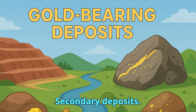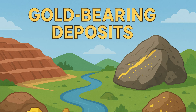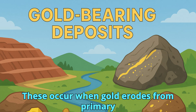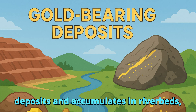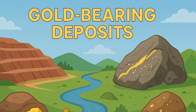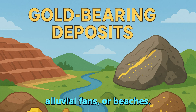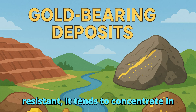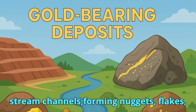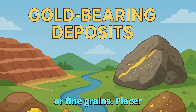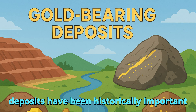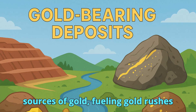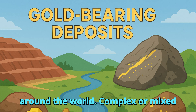Secondary, or placer, deposits occur when gold erodes from primary deposits and accumulates in riverbeds, alluvial fans, or beaches. Because gold is dense and chemically resistant, it tends to concentrate in stream channels, forming nuggets, flakes, or fine grains. Placer deposits have been historically important sources of gold, fueling gold rushes around the world.